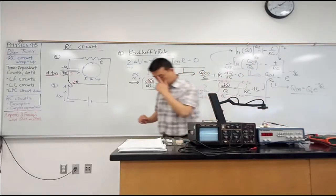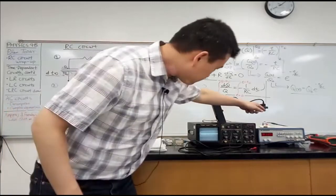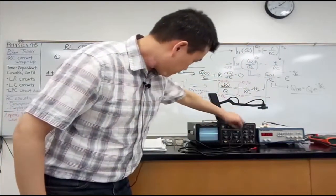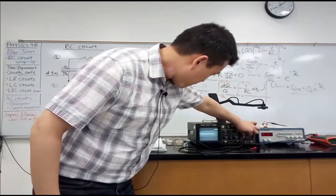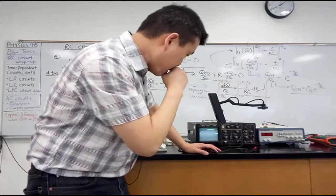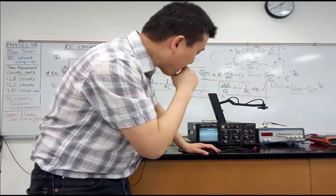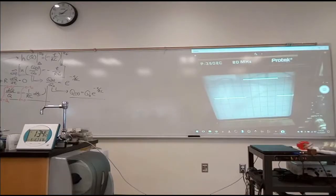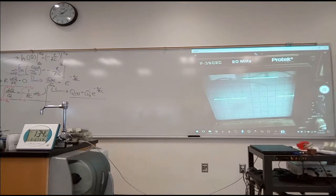So I connected the function generator. Let me turn on... is the time scale right? I'm at too high a frequency, probably, no? Okay, this is about right. Yeah, I think this is about right. Okay, so right now what this oscilloscope is showing is the output of the function generator. And I have set things up so that, let's see, auto...